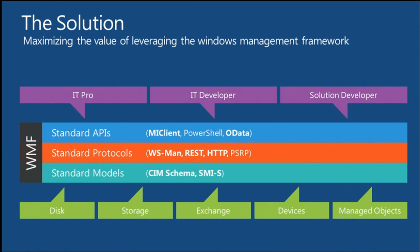We then have a standard way to connect to and interact with managed endpoints through WS-Management, REST, HTTP, or the PowerShell remoting protocol. We expose that through standard APIs. In this release, we've made significant investments in our managed client, providing a standard API. We have PowerShell, and new to this release, we're exposing PowerShell information through OData.